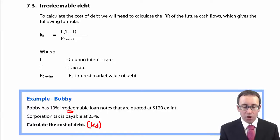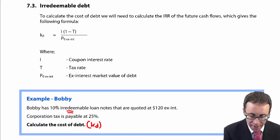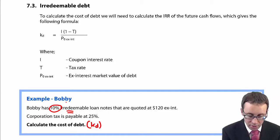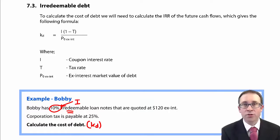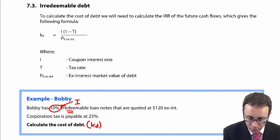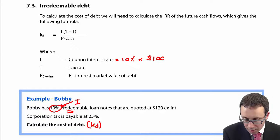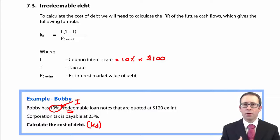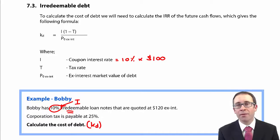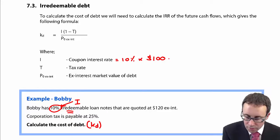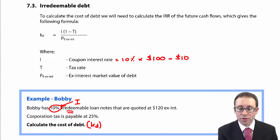So what you've got is it says Bobby has 10% irredeemable loan notes. So that will help you work out the interest. The coupon interest is there at 10%. And remember, they are quoted as a block of 100, each one at $1. So the par value or nominal value for that block is $100. So the interest is there at $10.